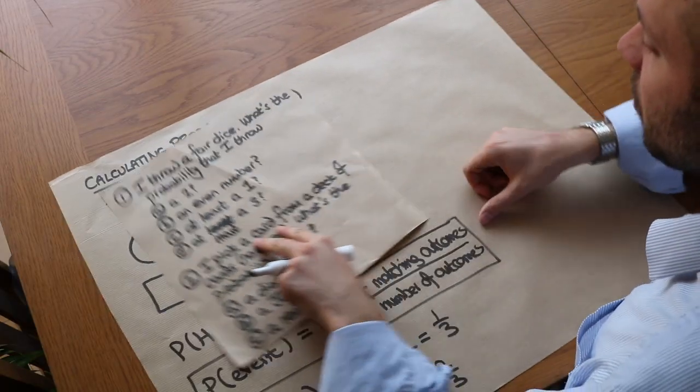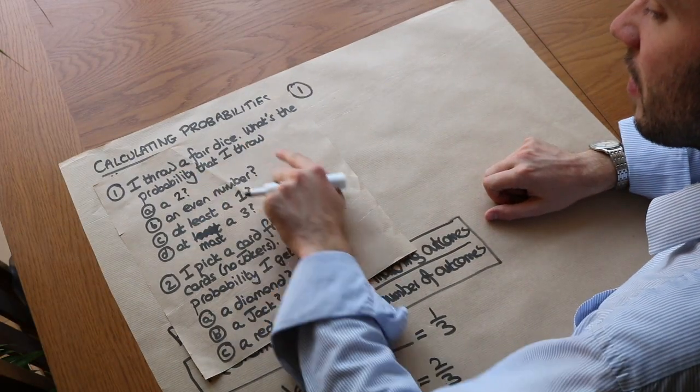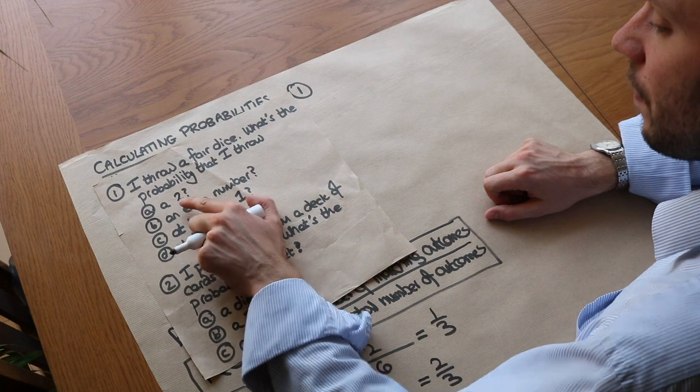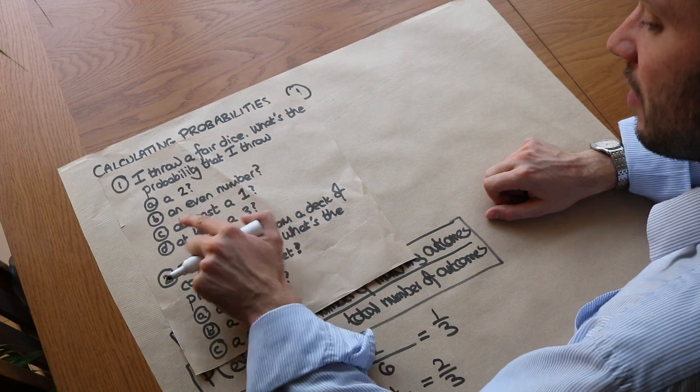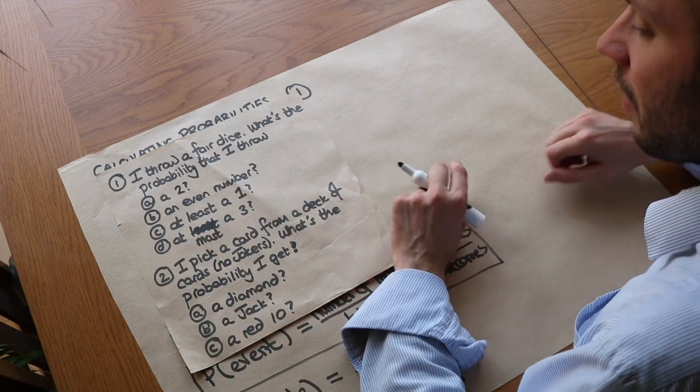Now let's try and answer these questions here. We've got: I throw a fair dice. What's the probability that I throw a two? An even number, at least a one and at most a three.